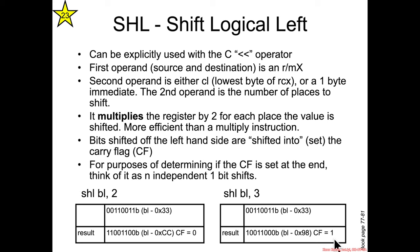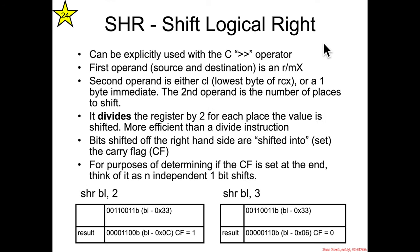Then there's shift logical right, which is the greater than greater than operator. It has the same general form as the shift left, it has two operands. The first is the source and destination, and it can be specified in an RMX form. The second is CL, the least significant byte of RCX, or a one byte immediate. And if shifting to the left multiplies by two, then shifting to the right divides by two.